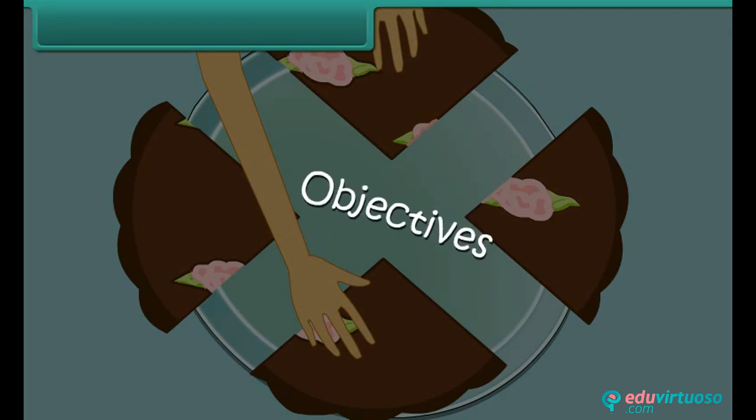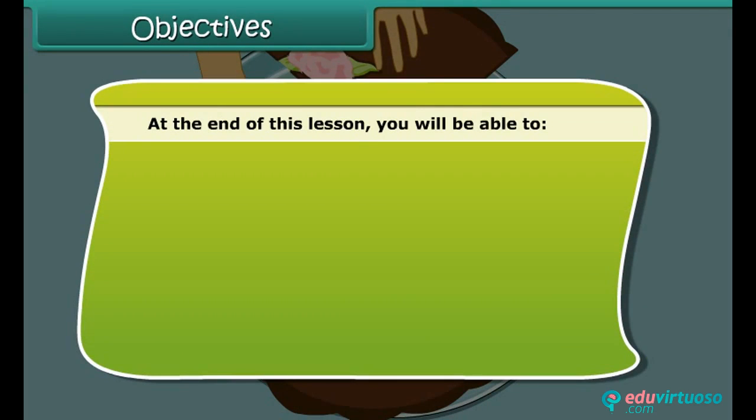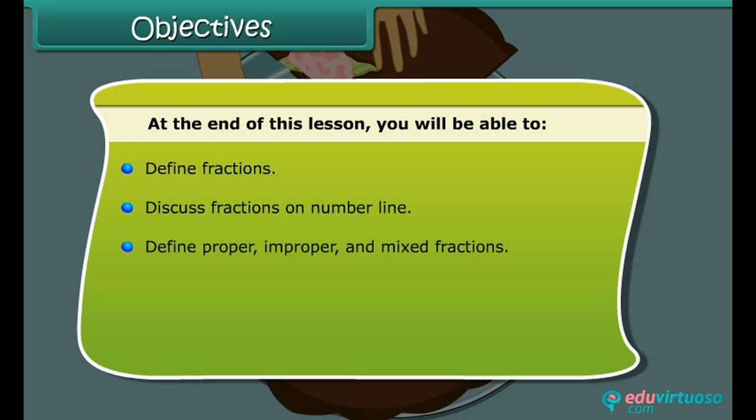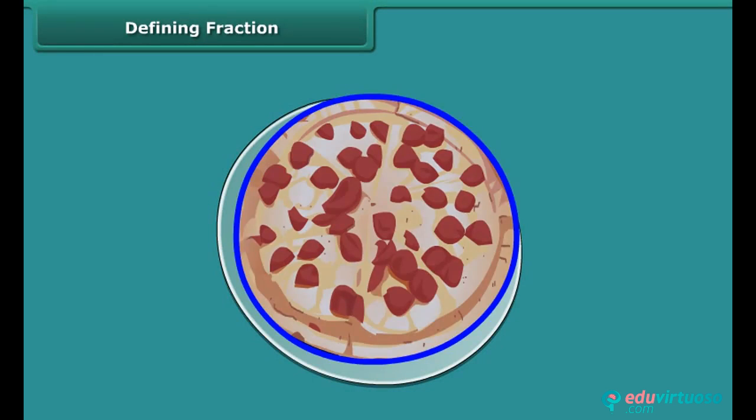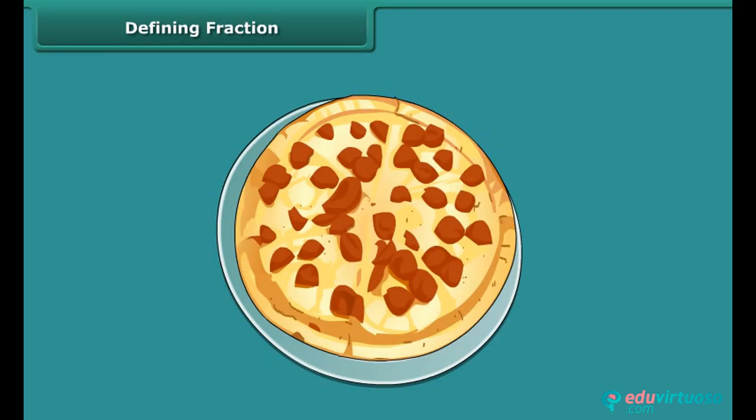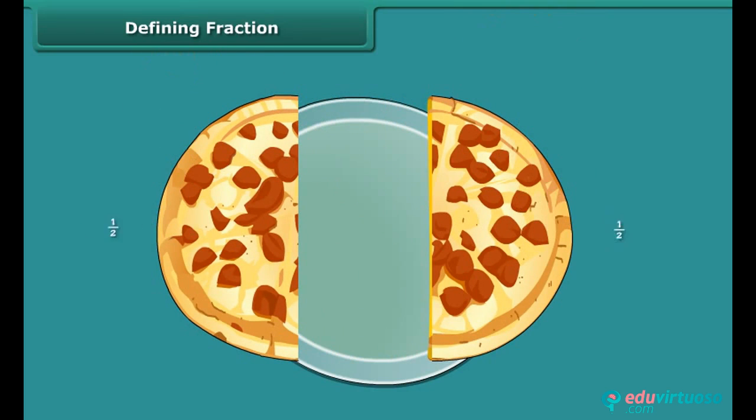Objectives. At the end of this lesson, you will be able to define fractions, discuss fractions on number line, define proper, improper and mixed fractions, understand equivalent fractions, and recall simplest form of fractions. A fraction indicates part of a whole thing. 1 upon 2 means that one whole thing is divided into two equal parts and one part out of these two parts is taken.